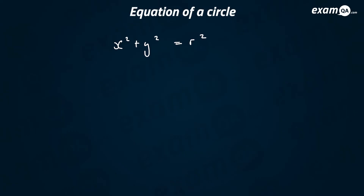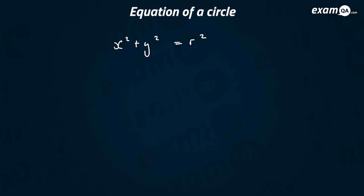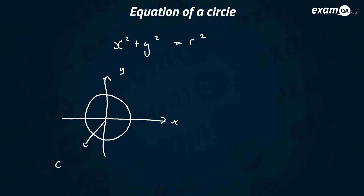The main equation of a circle for GCSE is x squared plus y squared equals the radius squared. What this represents is: if you draw an x and y axis, it represents a circle where the centre of the circle is (0, 0). Whenever you have this type of equation, where you have x squared plus y squared equals something, it's talking about a circle with centre (0, 0).